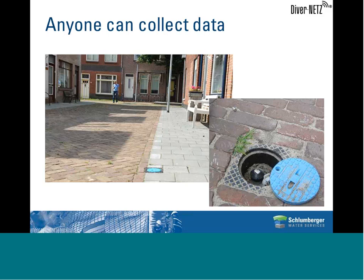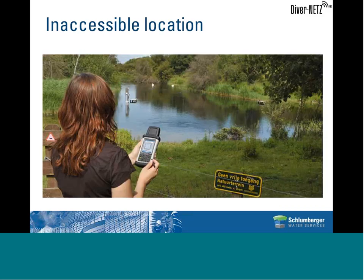Since there's nothing visible from the outside, it's also fairly safe from vandalism. For inaccessible locations—this sign means no access and it's a nature terrain—you can read the well data from a distance. The well is somewhere in the middle of the pond, so you don't have permission issues and you don't need a boat to get to your well.